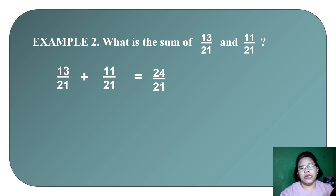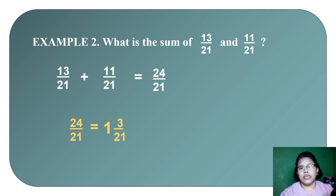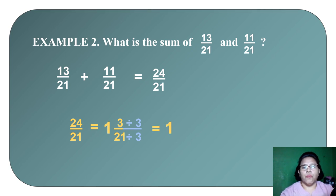So, how do we do that? We divide. 24 divided by 21 gives us 1 with a remainder of 3, so we have 1 and 3/21. Now, observe that 3/21 can be reduced — divide both by 3: 3 ÷ 3 = 1 and 21 ÷ 3 = 7. So the final answer is 1 and 1/7. Therefore, 13/21 plus 11/21 equals 24/21, or 1 and 1/7.